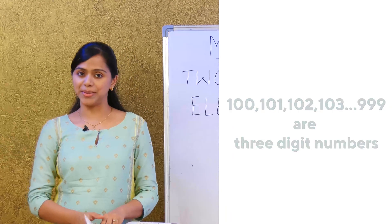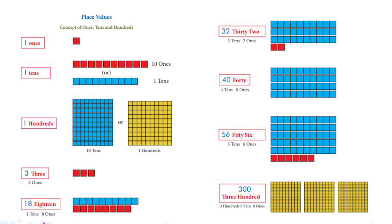Now let's look at place values — this is the concept of ones, tens, and hundreds. First we have ones, then we have tens, which is ten ones. Then we have hundreds, which is ten tens. For example, three ones is simply the number 3.